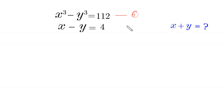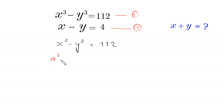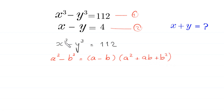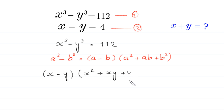Let us call this equation 1 and this equation 2. From equation 1, x cubed minus y cubed is equal to 112. By using the algebraic identity a cubed minus b cubed equals a minus b times a squared plus ab plus b squared, x cubed minus y cubed becomes x minus y times x squared plus xy plus y squared, equal to 112.